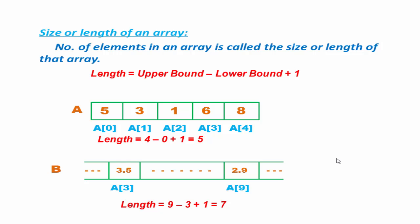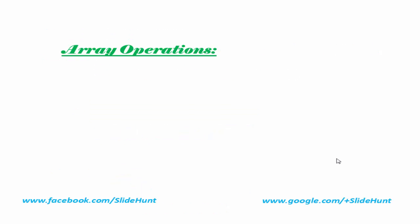Next we see what operations are performed on an array. The first one is insertion — insertion means adding a new element to the array. Next is deletion — deletion means removing an element from the list. Third is traversal — traversal means processing each element in the list.